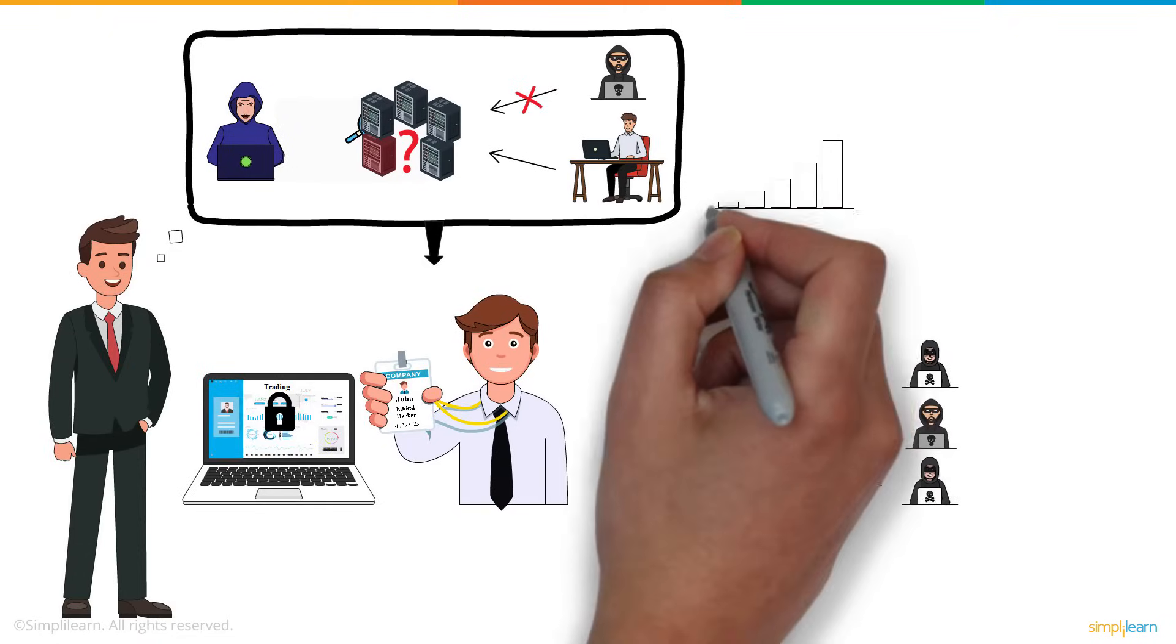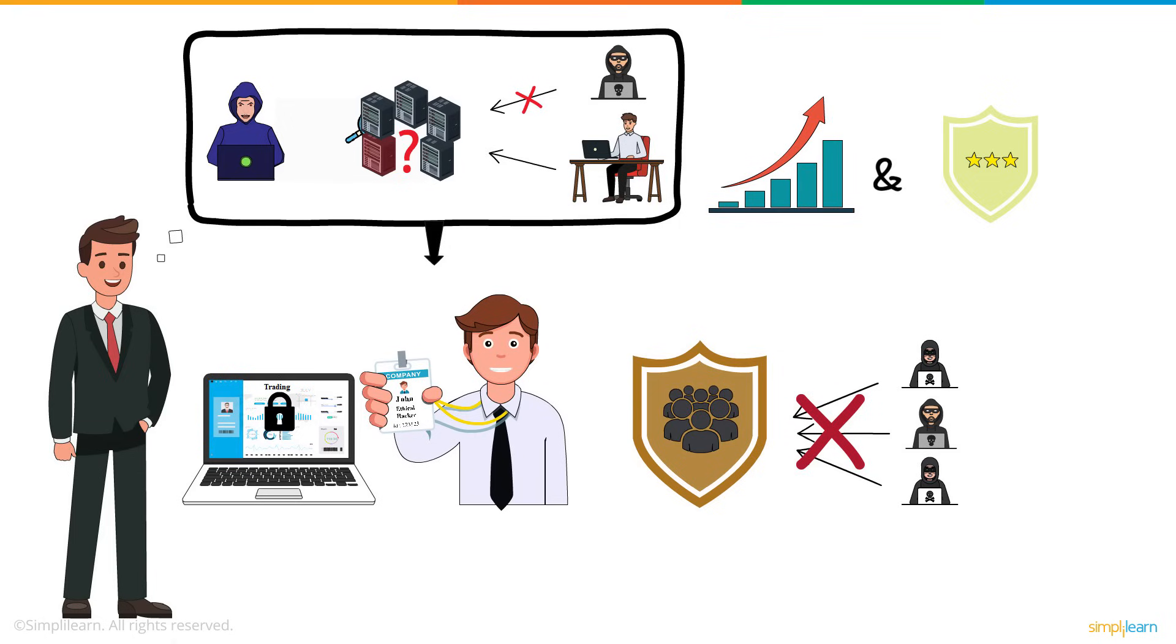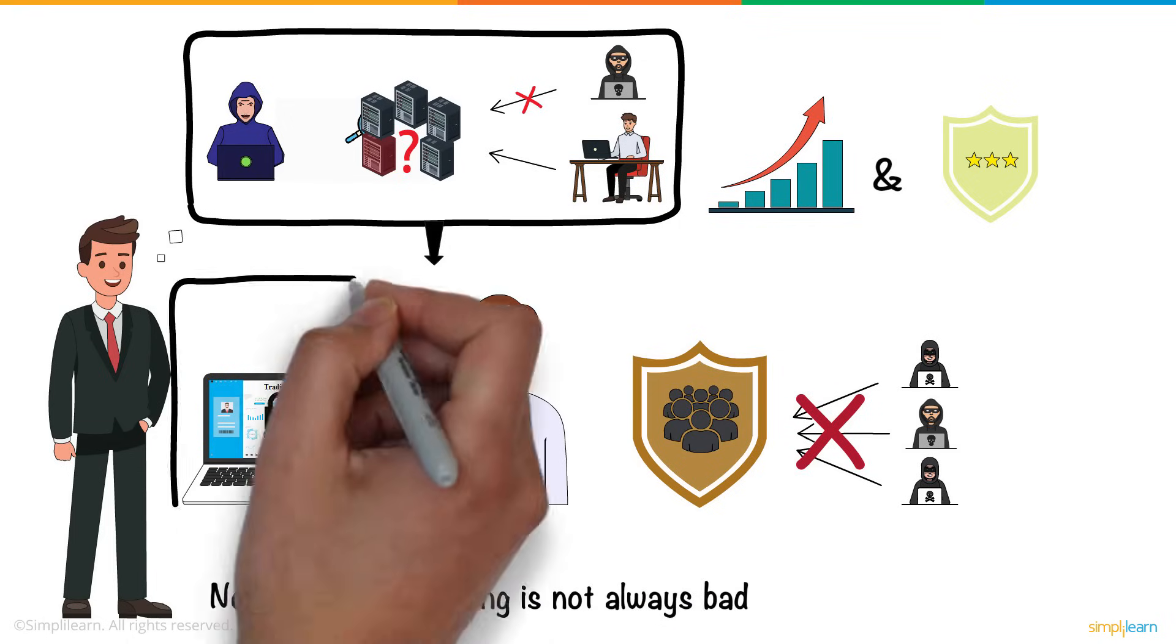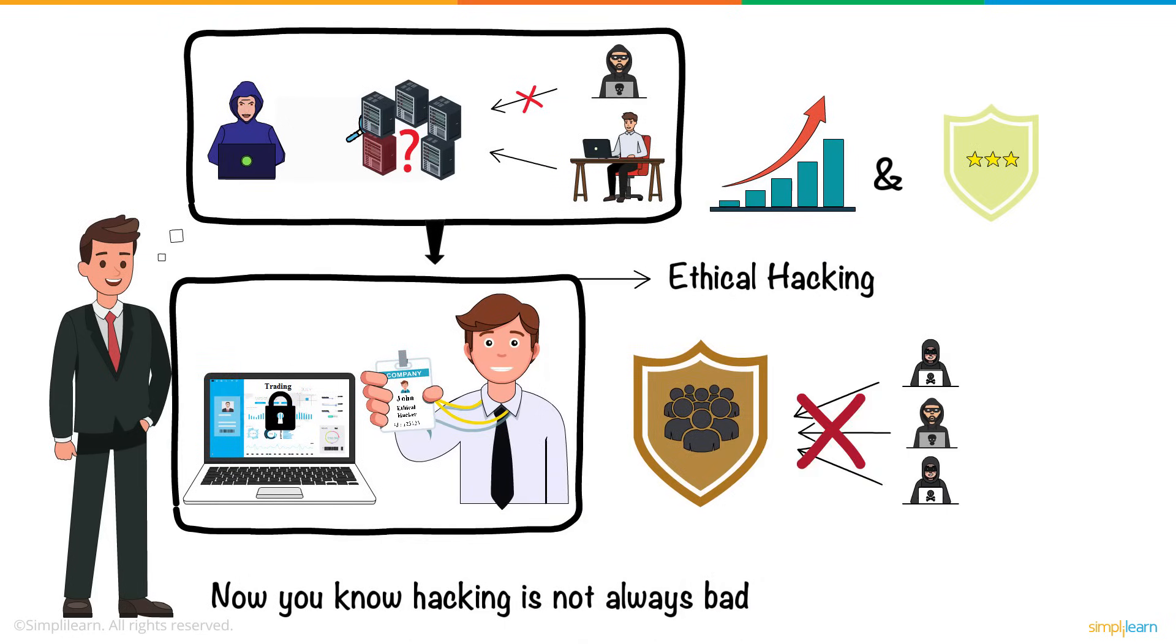This, in turn, increased the company's productivity and guarded the company's reputation. So, now you know hacking is not always bad. John, in this scenario, exposed the vulnerabilities in the existing network and such hacking is known as ethical hacking.